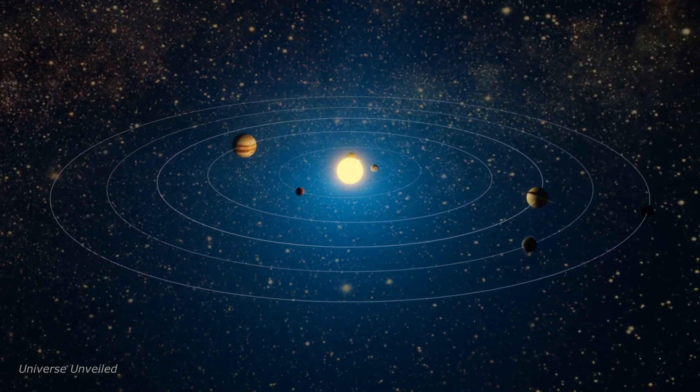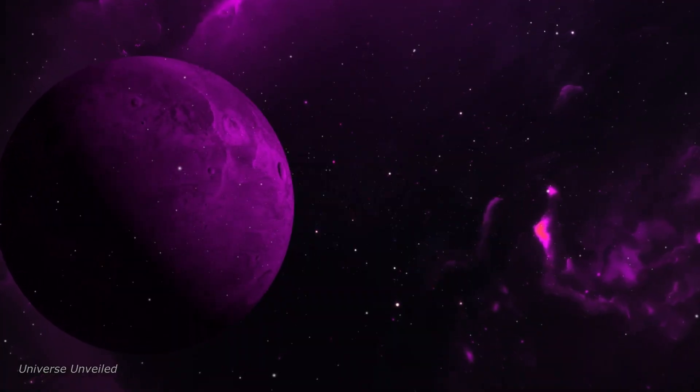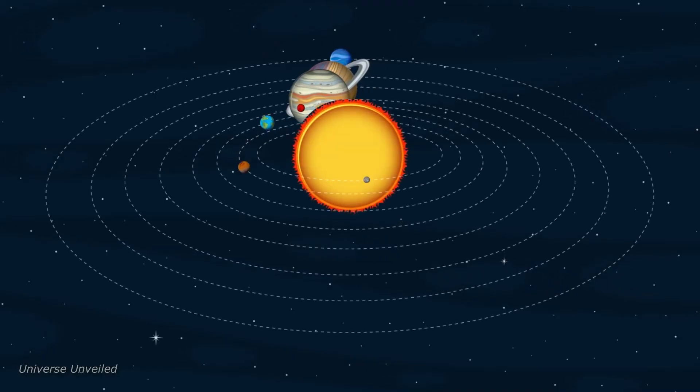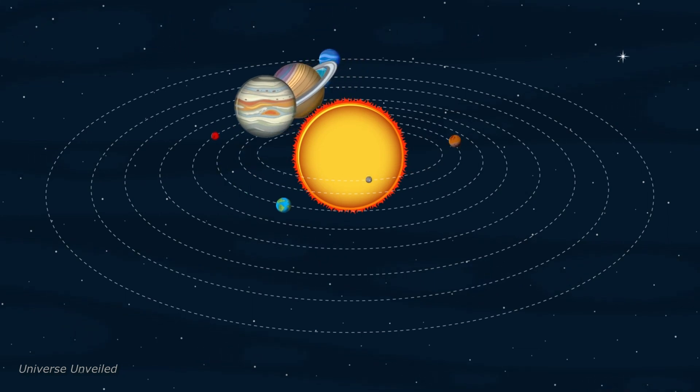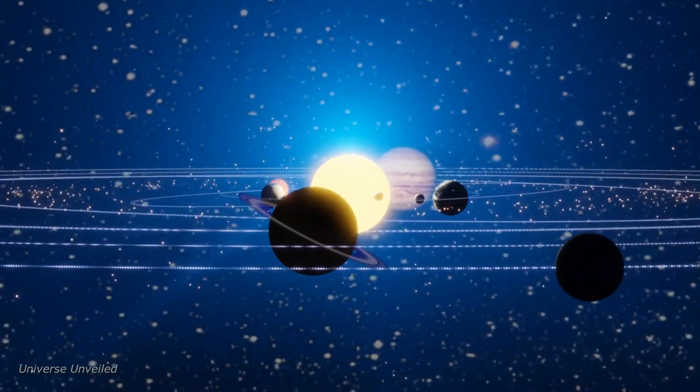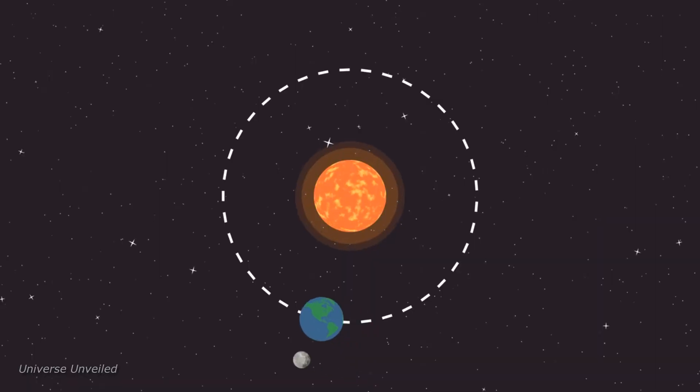The ice giants, Uranus and Neptune, lie in the outer reaches of our solar system. Uranus, with its unique tilt, spins on its side, while Neptune, the farthest planet from the Sun, is known for its intense blue color and violent storms.